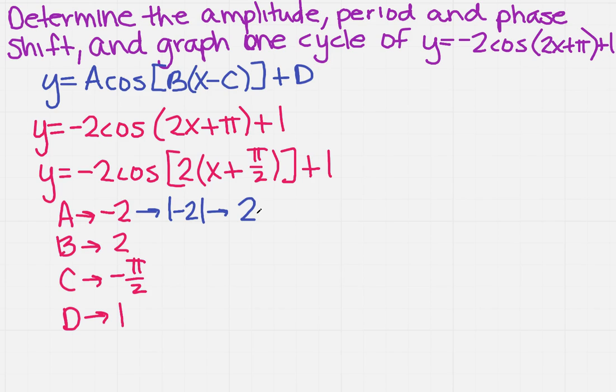Now, B is 2, but that doesn't tell us anything, right? We actually have to use the period formula. So the period is 2 pi over B, and in our case, B is 2, so 2 pi over 2, so this is going to be pi.